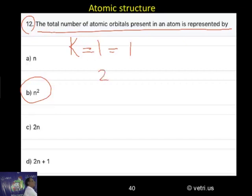So 2 means automatically 4. 3 means 9. And 4 means 16. This is the orbitals.